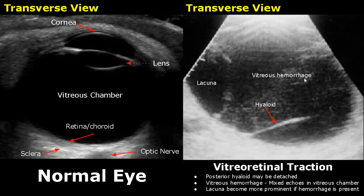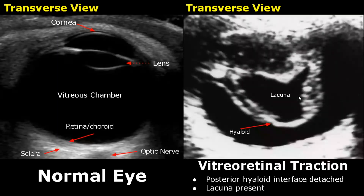Vitreoretinal traction will also cause vitreous hemorrhage, which appears as mixed echoes in the vitreous chamber. The hemorrhage makes the lacuna more prominent. In this image, we can see a detached hyaloid membrane with a lacuna present in the center.